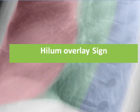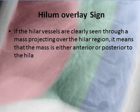My topic today is about the Hilum overlay sign — what is the Hilum overlay sign and what is its significance in the evaluation of mediastinal masses. If we have a mass in the mediastinum and we see the hilum vessels clearly seen through that mass, projecting over the hilar region, it means that the mass is either located anterior or posterior to the hilum.